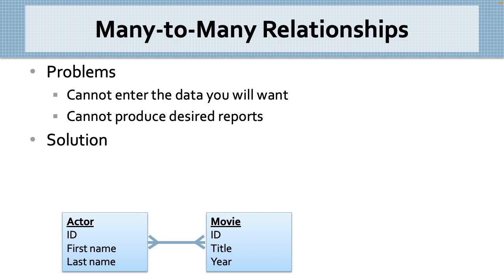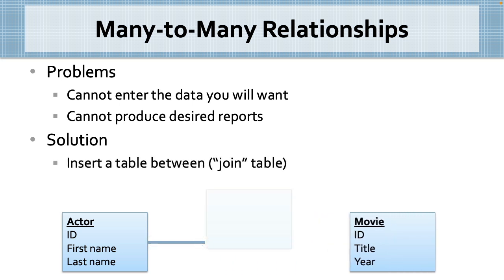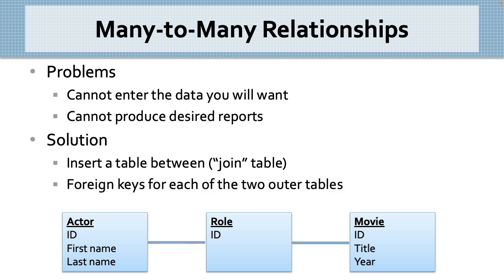The solution to resolving a many-to-many relationship is to insert a table between the two tables. This middle table is generically referred to as a join table, but finding a good name for the entity can be a challenge. An actor in a movie is playing a role, so we'll call this middle table role. It should have a primary key field, and we'll need two foreign key fields, so it can relate to each of the two outer tables. In this case, actor ID and movie ID. This resolves the unhealthy many-to-many relationship into two healthy one-to-many relationships, and it is what you must do every time you discover a many-to-many relationship in your data model.